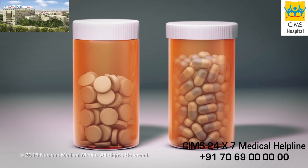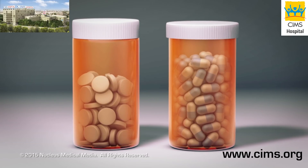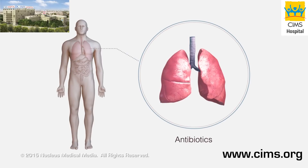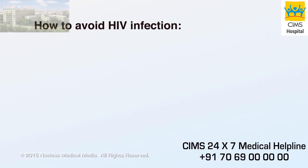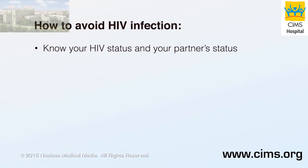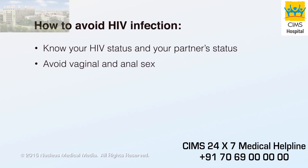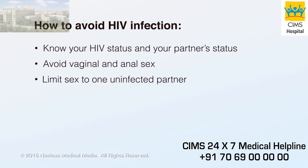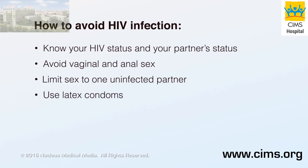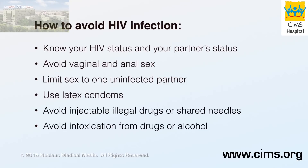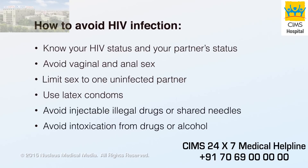Treatments for the opportunistic infections of AIDS are medications specific for each type of infection. For example, your doctor may prescribe antibiotics if you have pneumonia or tuberculosis. To avoid getting or spreading an HIV infection, know your HIV status and your partner's status by getting tested regularly. The most effective way to prevent HIV infection is to avoid vaginal and anal sex. When engaging in sexual activity, you will be less likely to contract HIV if you only have sex with one uninfected partner or use latex condoms for protection. Avoid using injectable illegal drugs or sharing drug needles, and avoid intoxication from drugs or alcohol, as you will be more likely to engage in unsafe sexual behavior.